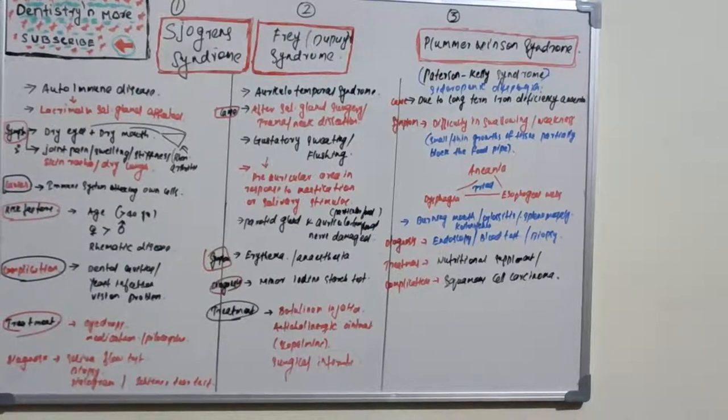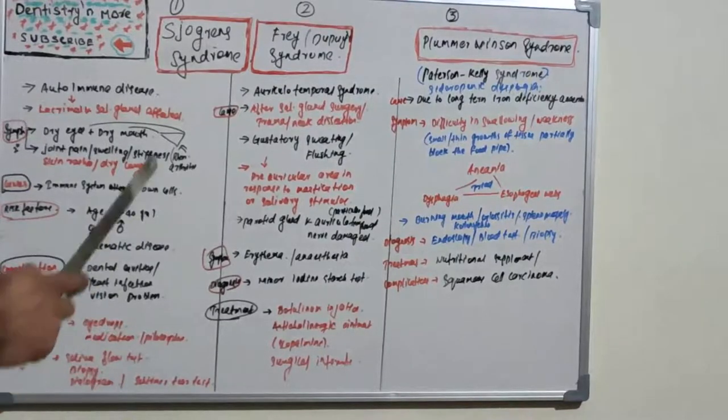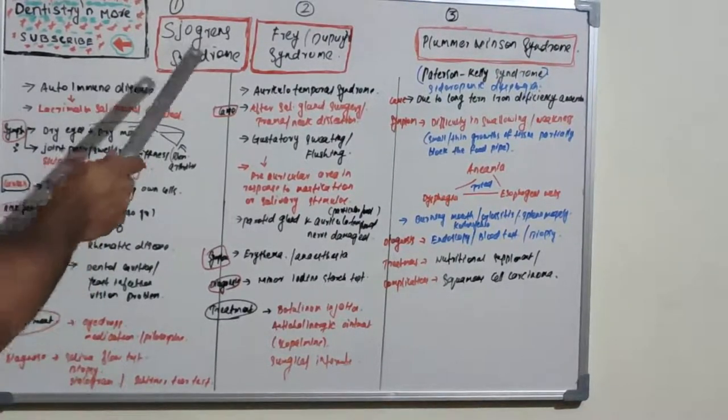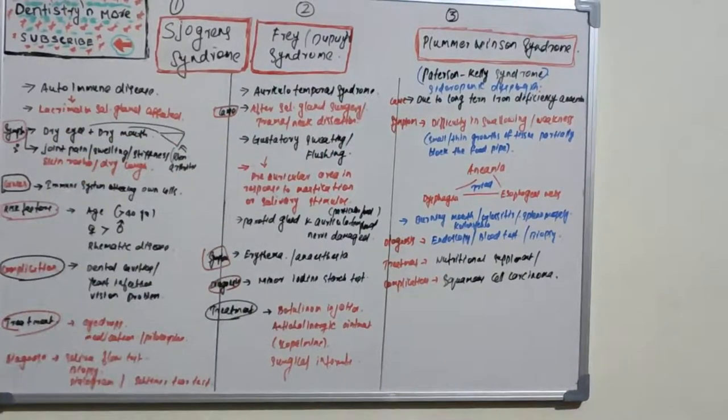Hello everyone, welcome back to a new session on Dentistry and More. In oral pathology, today's session will be dealing with three syndromes: Sjögren's syndrome, Frey's syndrome, and Plummer-Vinson syndrome. We have many syndromes in oral pathology, so this session is just highlighting three syndromes, and coming sessions will deal with further syndromes.